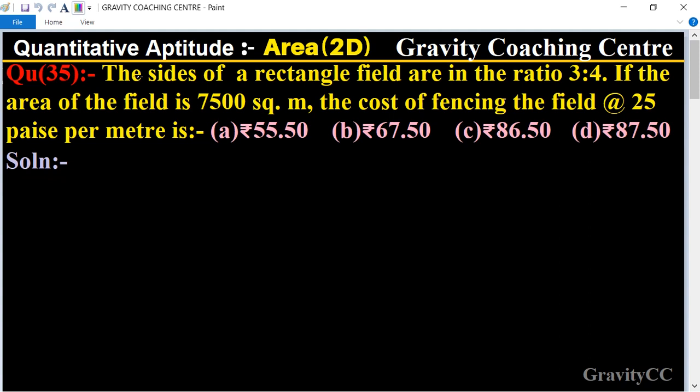fencing the field at the rate of 25 paise per meter is... In this question, the ratio of the sides is given as 3 to 4. So first of all, we let the length be 3x and breadth be 4x.